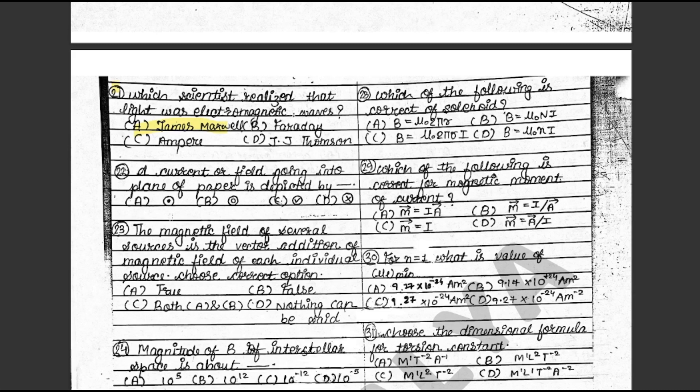Question 22: A current or field going into the plane of paper is depicted by a dash. The answer is D. This is on textbook page 133. Question 23: The magnetic field of several sources is the vector addition of magnetic field of each individual source. Choose the correct option. This statement is true. This is on textbook page 134.